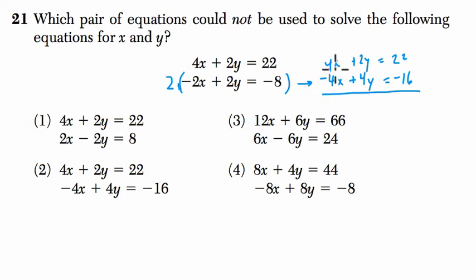Well, the 4x and negative 4x, if I add these two, they cancel out, and I get 6y equals 6. Then I know y equals 1, then I can take y, plug it in to either equation and solve for x.